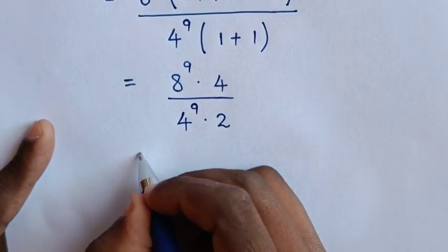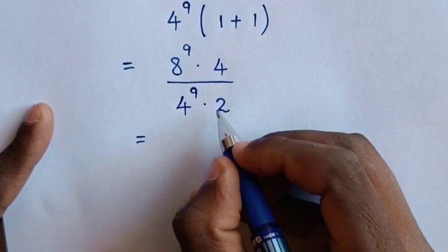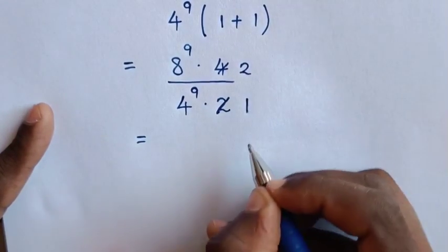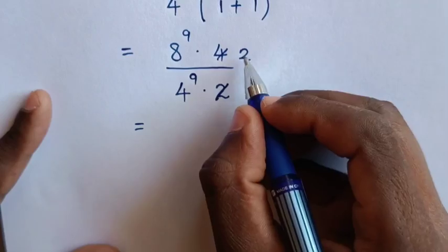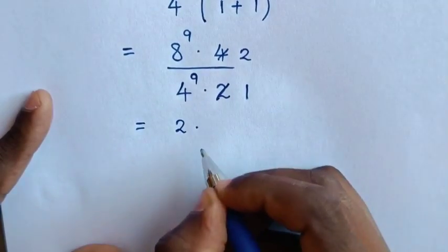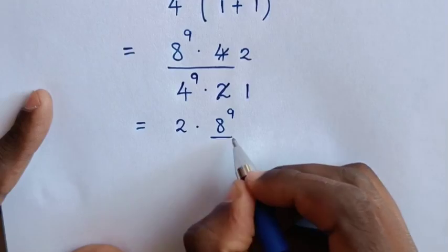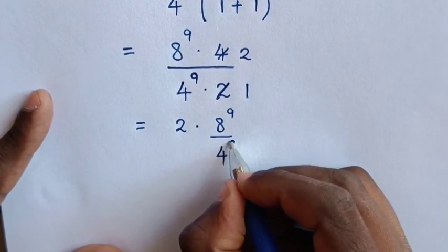Then this is equal to, in here to simplify, 4 will be divided by 2 to 2 and 2 by 2 is 1. So here we start by writing 2 times this 8 power 9 over this 4 power 9.